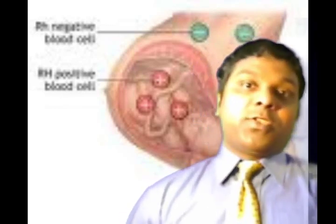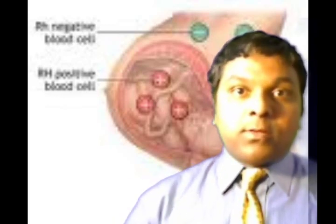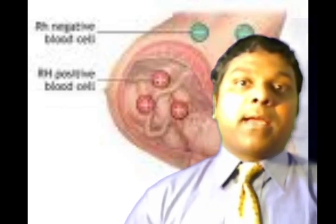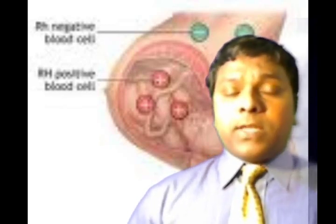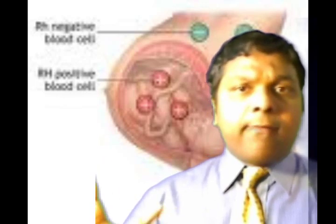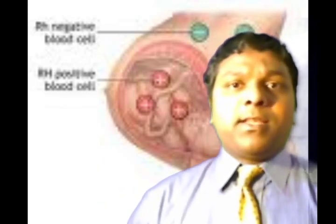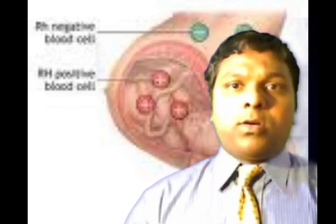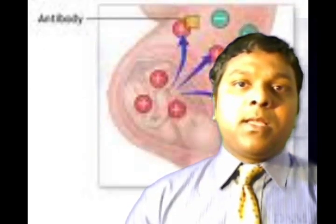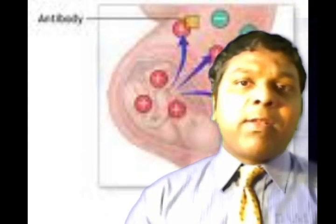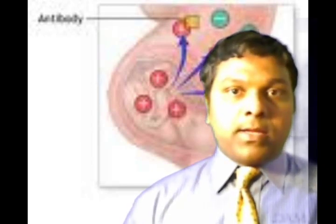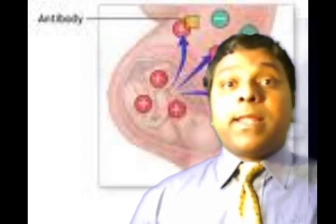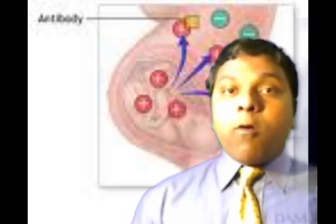Those antibodies cross the placenta and the fetal cells are attacked. Now, according to incidence, some regions like the Basque region in northern Spain have around 35 percent RH incompatibility — something quite remarkable. Overall, in RH negative mothers it is about 16 percent: approximately seven percent of cases happen within six months of delivery, another seven percent during the second pregnancy, and the remaining two percent in the antepartum period.